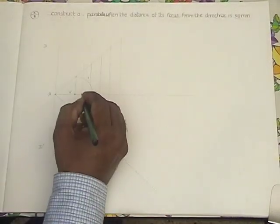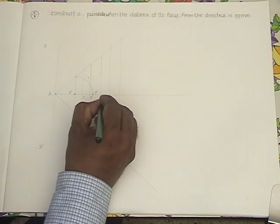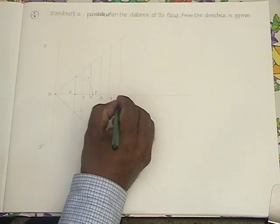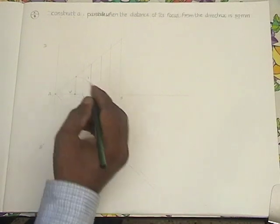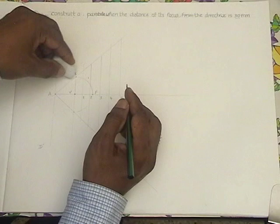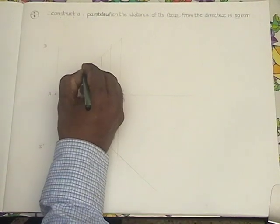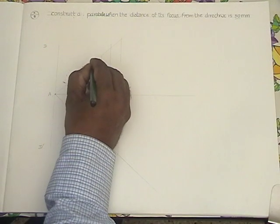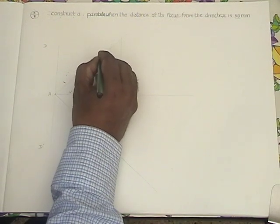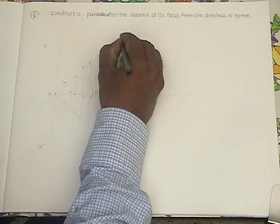Now mark these points. This is point number one, two, three, four, five. We have one dash, one dash, two dash, three dash, four dash, five dash.